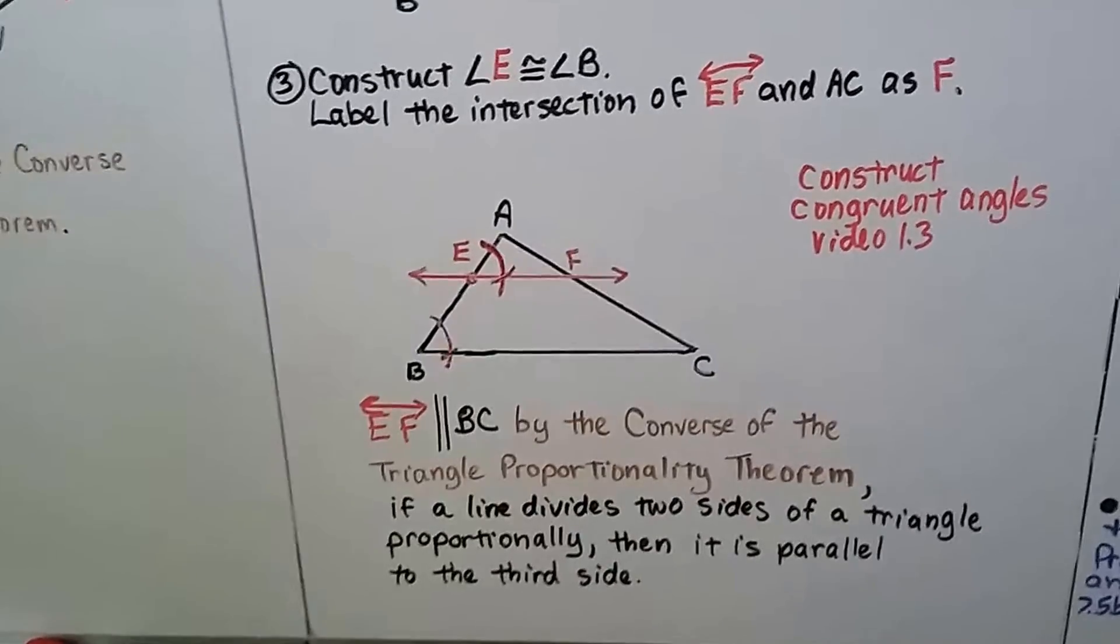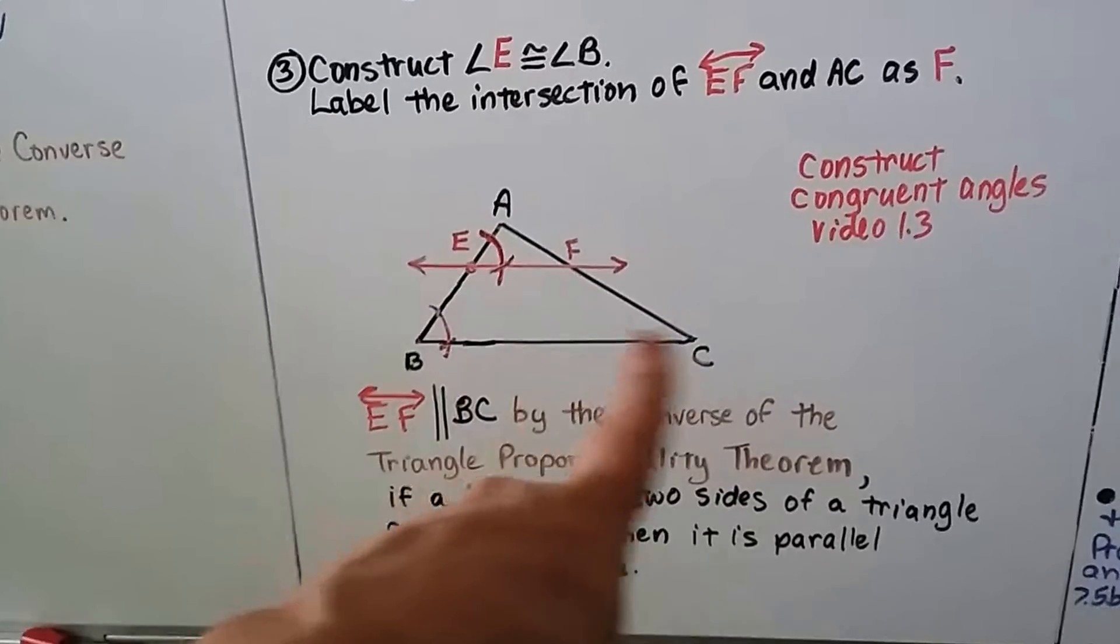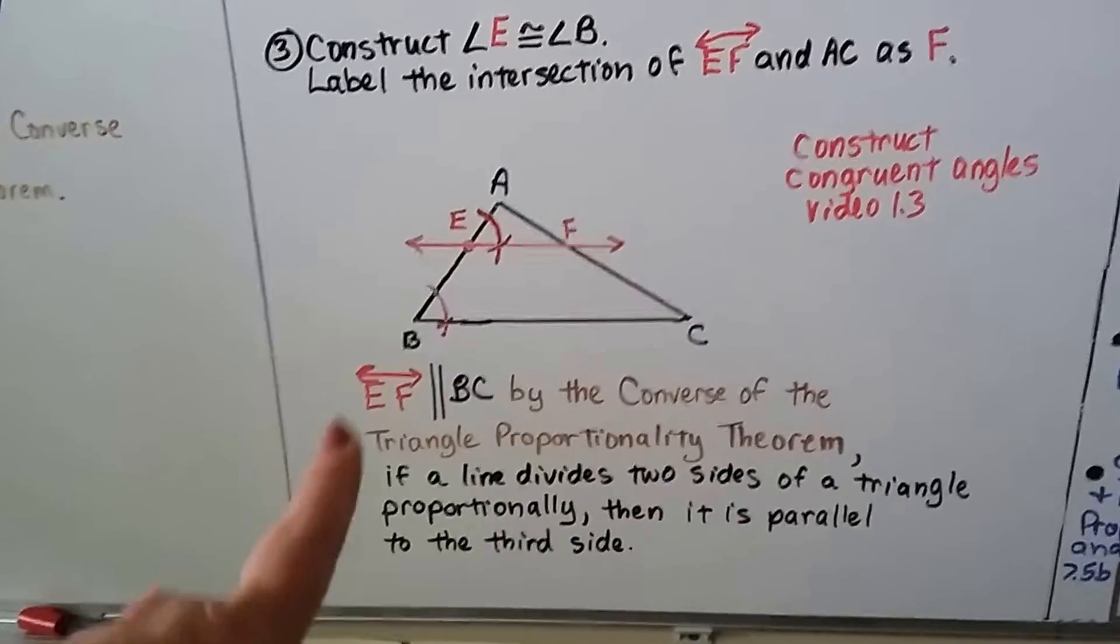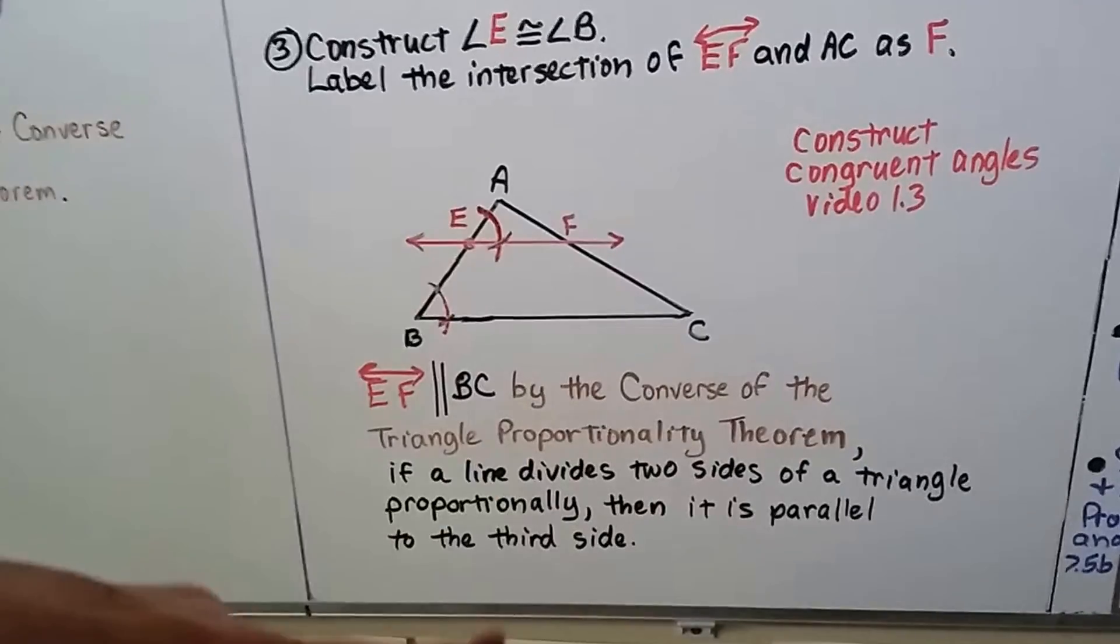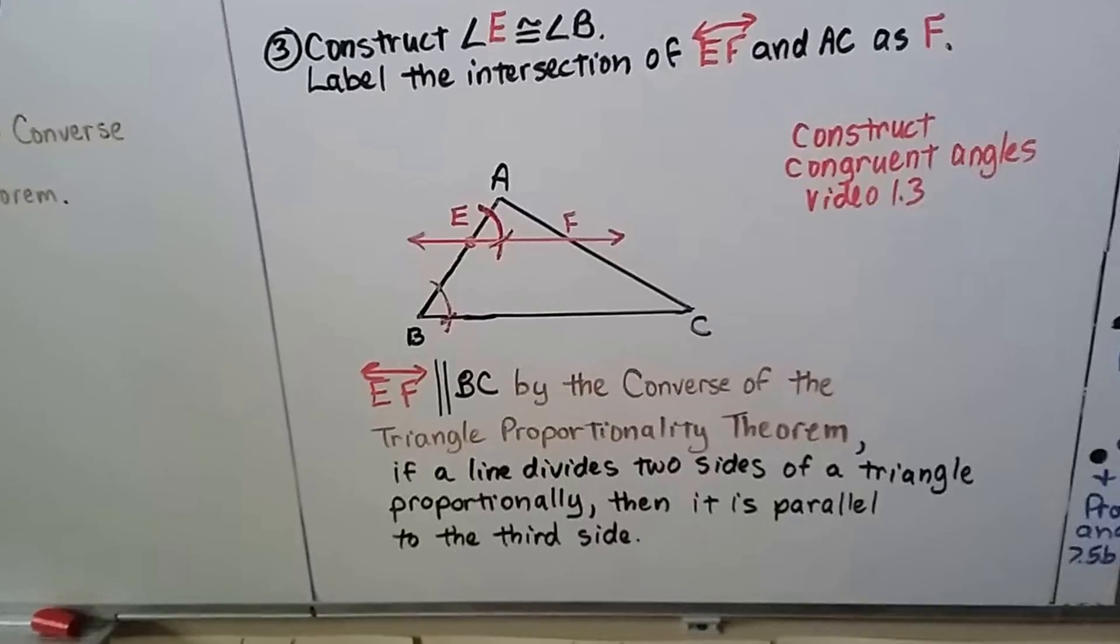And line EF is parallel to BC by the converse of the triangle proportionality theorem. So we made a line parallel to BC.